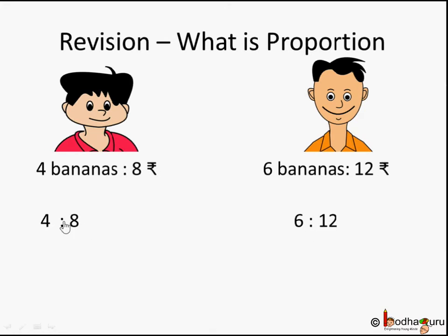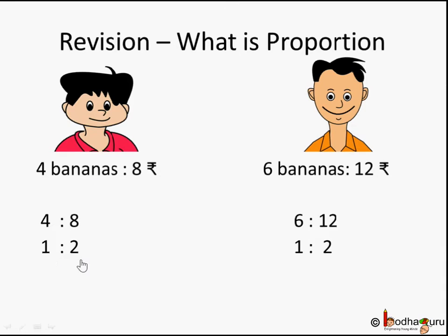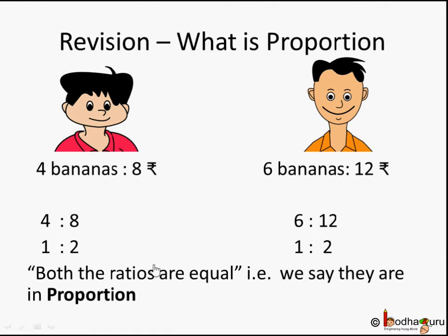The ratio of bananas to rupees for Anand is 4 to 8, and for Aman it is 6 to 12. If you divide, 4 by 8 comes out to be 1 by 2, and 6 by 12 is also 1 by 2. So even though they bought different quantities and paid different prices, the price per banana is the same. When two ratios turn out to be equal, we say they are in proportion.